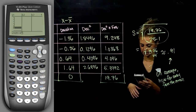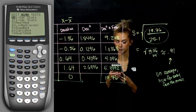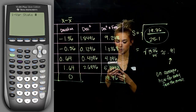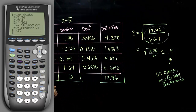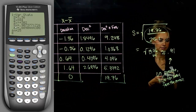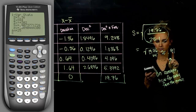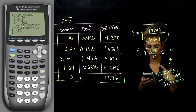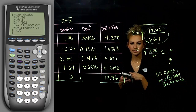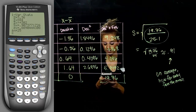Go back to STAT, over to CALC, and select one-variable statistics since we only inputted one list. Hit Enter to run it. We can verify: x-bar shows 3.36, same as what we calculated by hand. Sx is our sample standard deviation — rounded to two decimal places, it's 0.91, matching our hand calculation. N equals 25 confirms we inputted the correct number of data items.